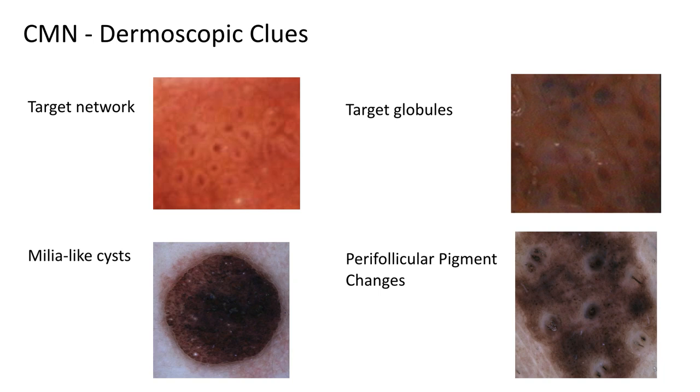We'll take a closer look at four clues that have been proposed: target network, target globules, milia-like cysts, and perifollicular pigment changes.